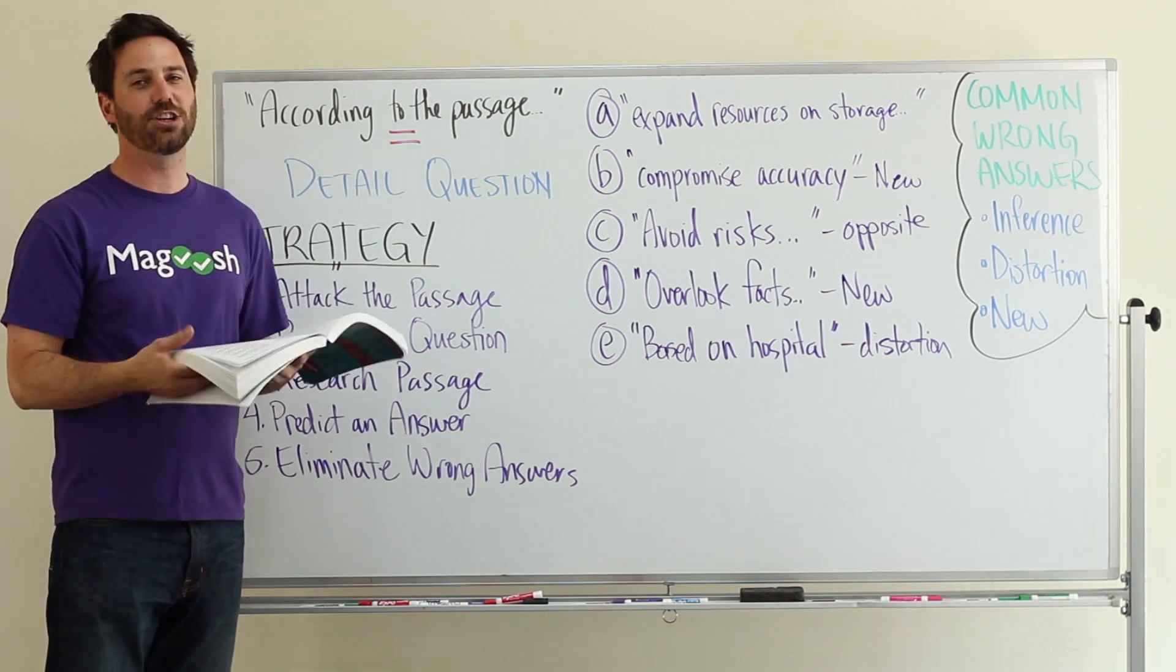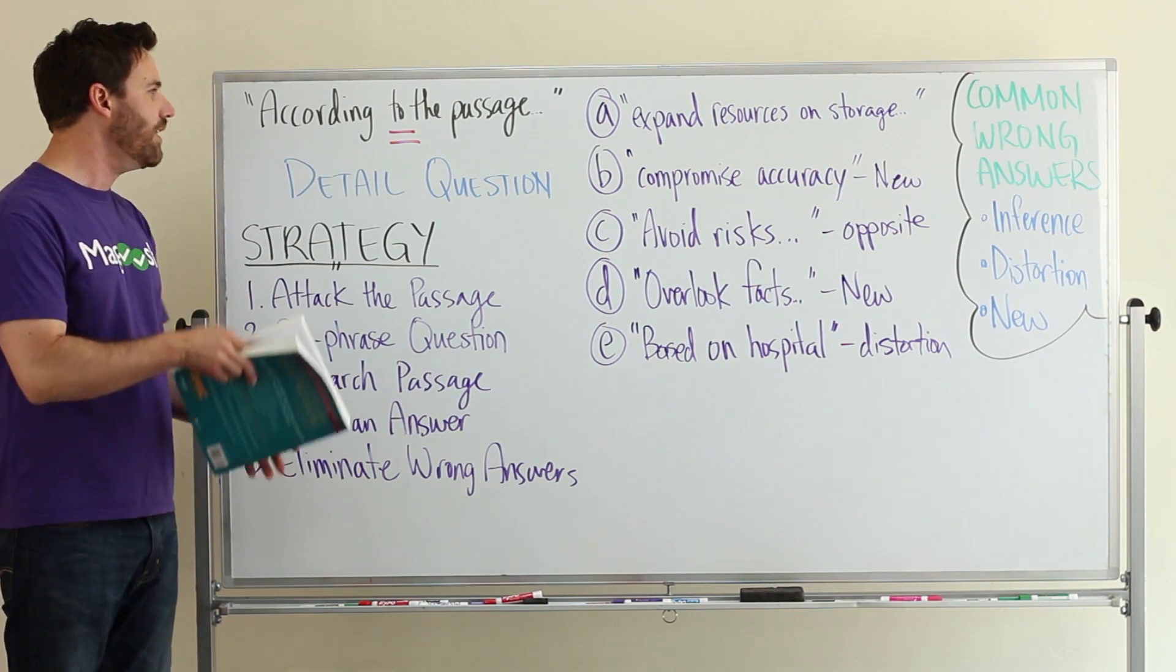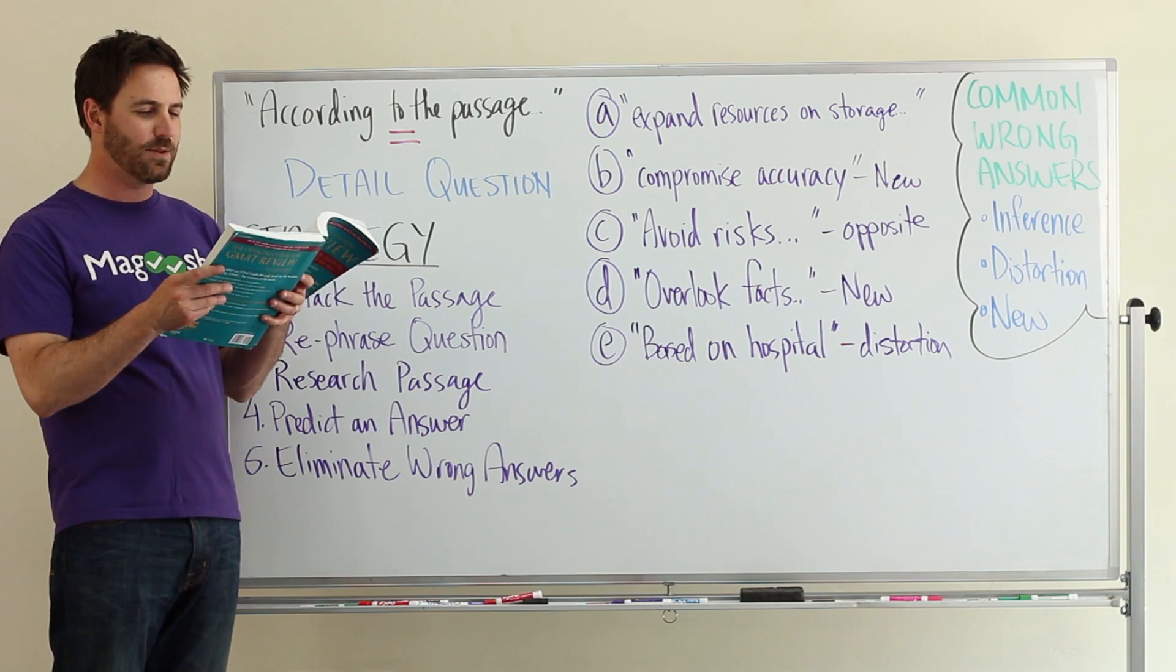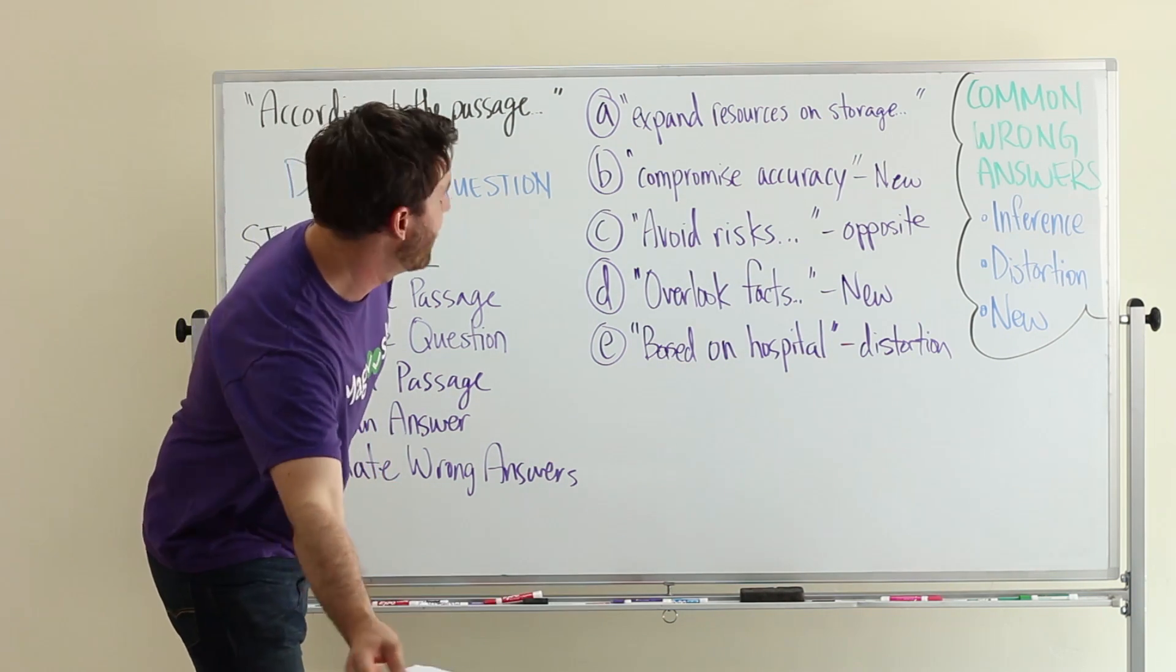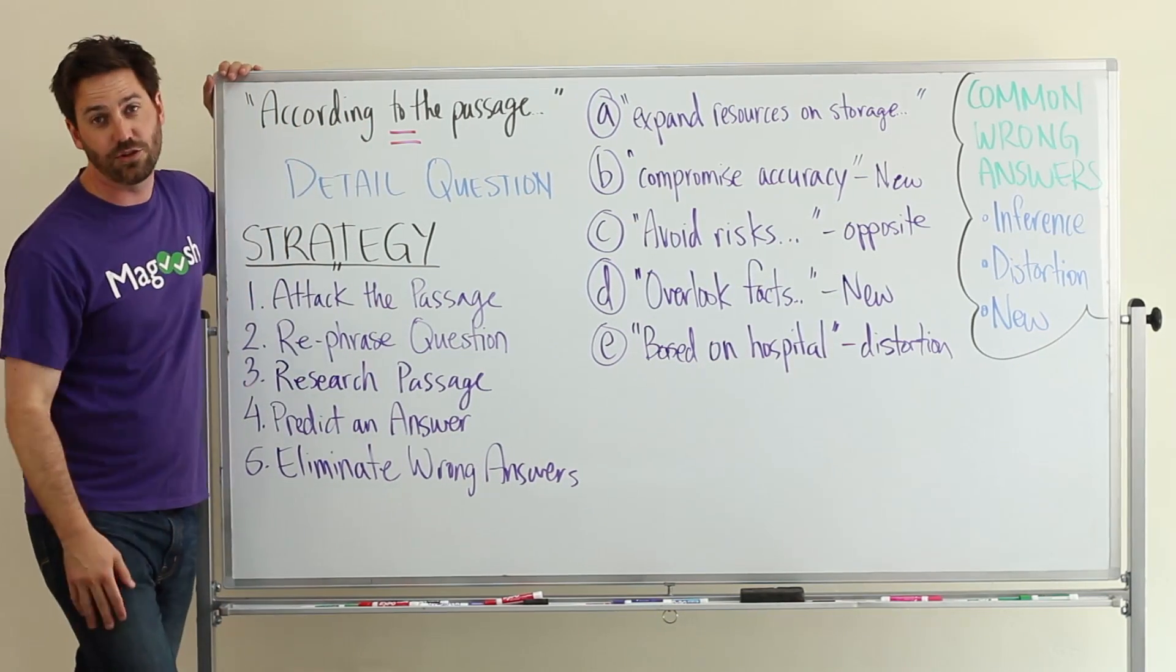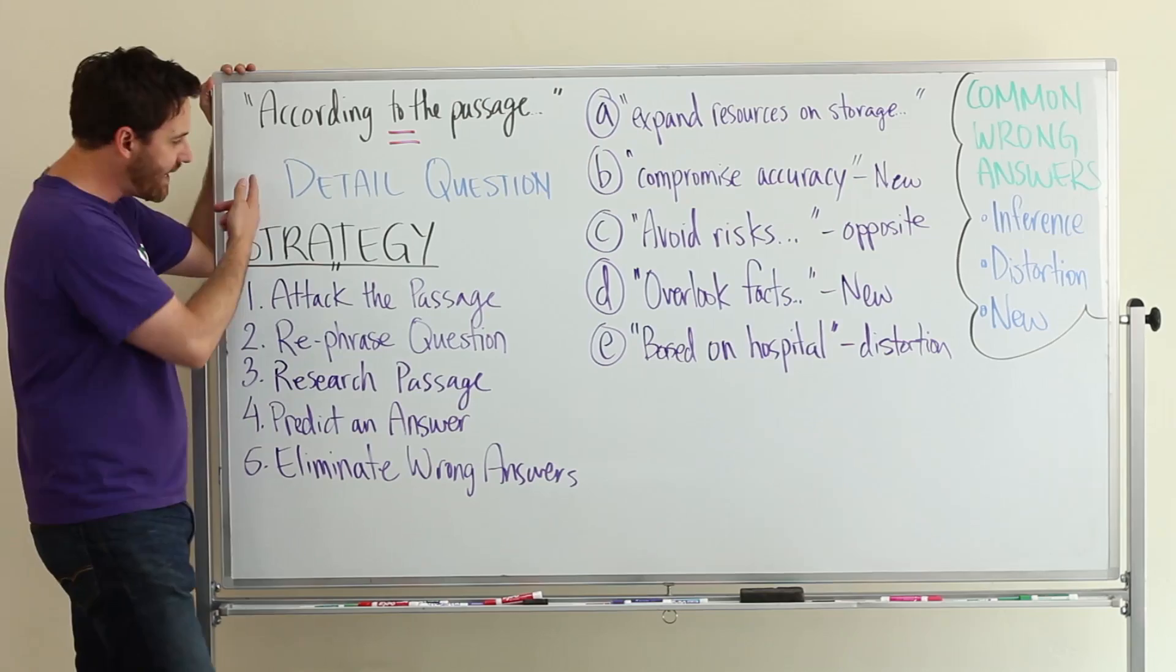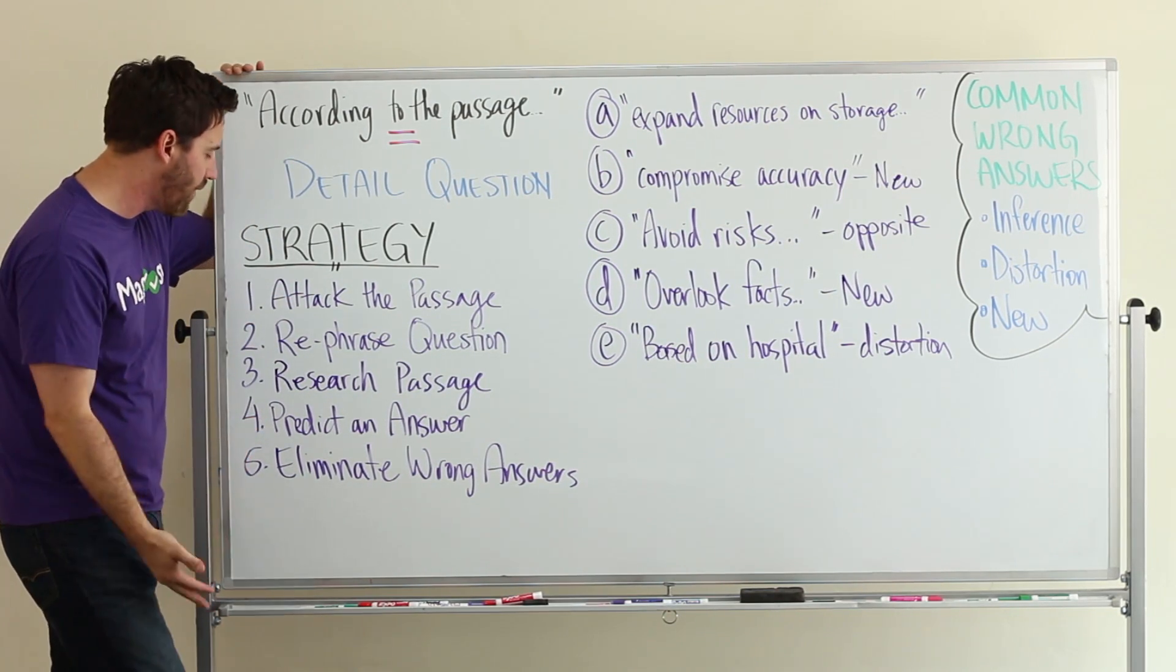So we're on question 103, and question 103 says: according to the passage, which of the following describes the result of the way in which researchers generally conduct their trials? So anytime you see the phrase 'according to the passage,' it's going to be a detailed question. And when it's a detailed question, you have a strategy that you can follow.